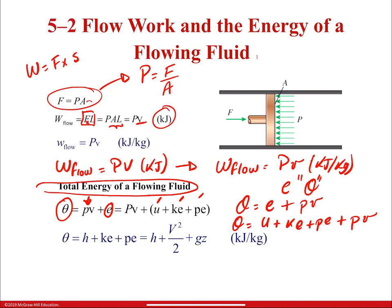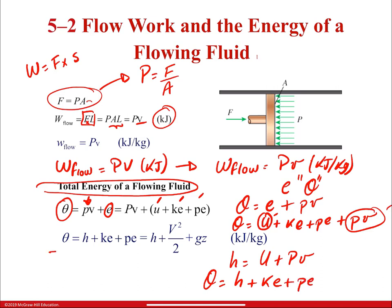Developing the equation further: since H = U + Pv (enthalpy, known from previous chapters), we can replace U + Pv with H. So theta (θ) equals enthalpy plus kinetic energy plus potential energy. Expanded: θ = H + V²/2 + gz. The only thing added was the energy that the mass carries into the system — the flow work.